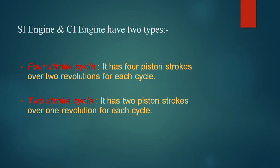In the other type, the two-stroke engine, it has two piston strokes over one revolution per cycle. To complete one cycle, the piston has to move twice. That is about four-stroke and two-stroke engines.